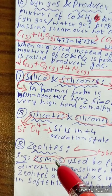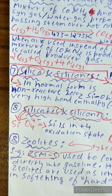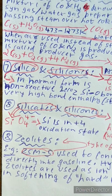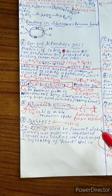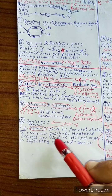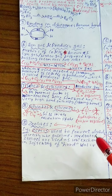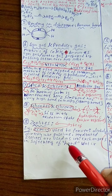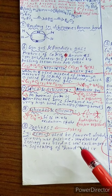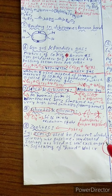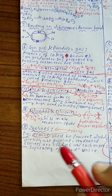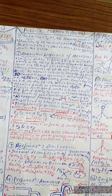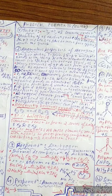To know about zeolites, consider ZSM-5, which is a type of zeolite. It is used to convert alcohols directly into gasoline. Hydrated zeolites are used as ion exchangers in softening of hard water.